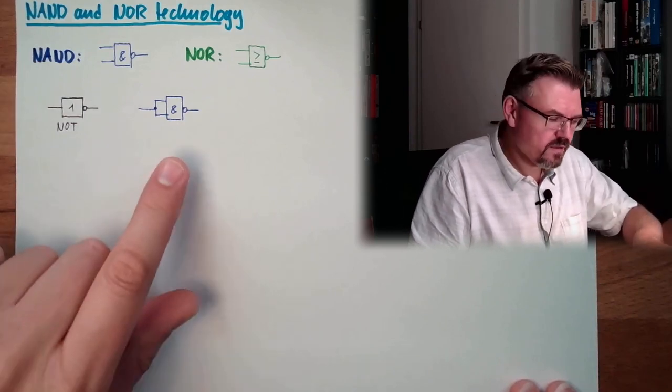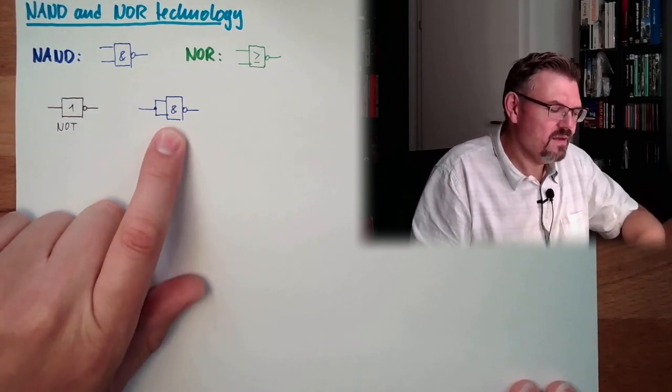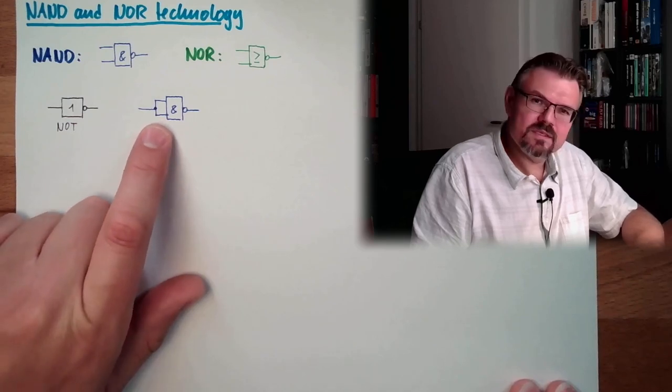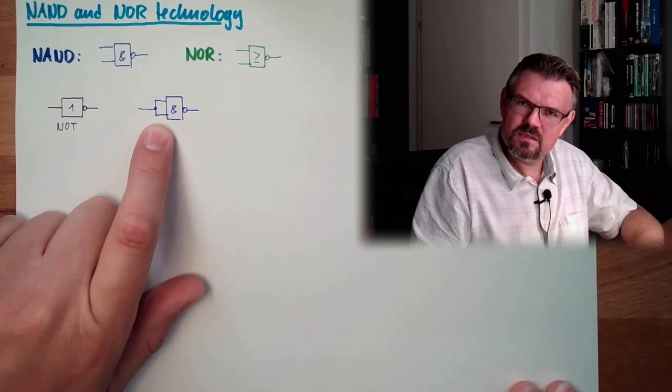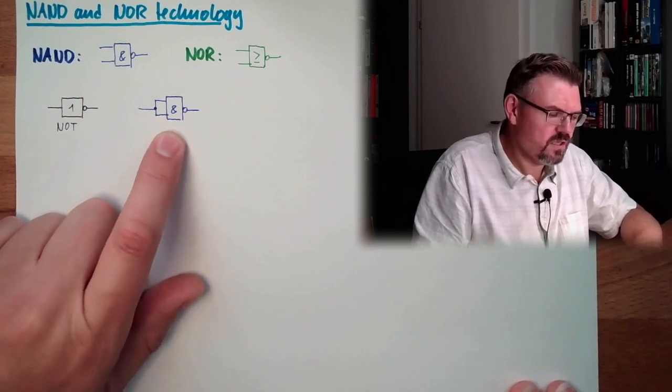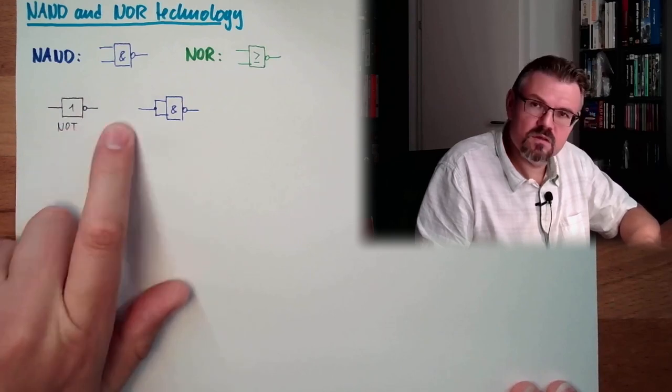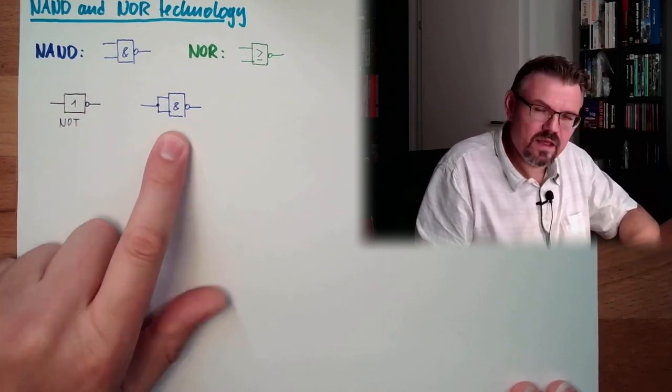Because if we look at the table of truth, a NAND is only, if both are 0, it's 1, if both are 1, it's 0, alright. And this is exactly fulfilling this. This is exactly fulfilling the function of a NOT. This is a NOT in NAND technology.